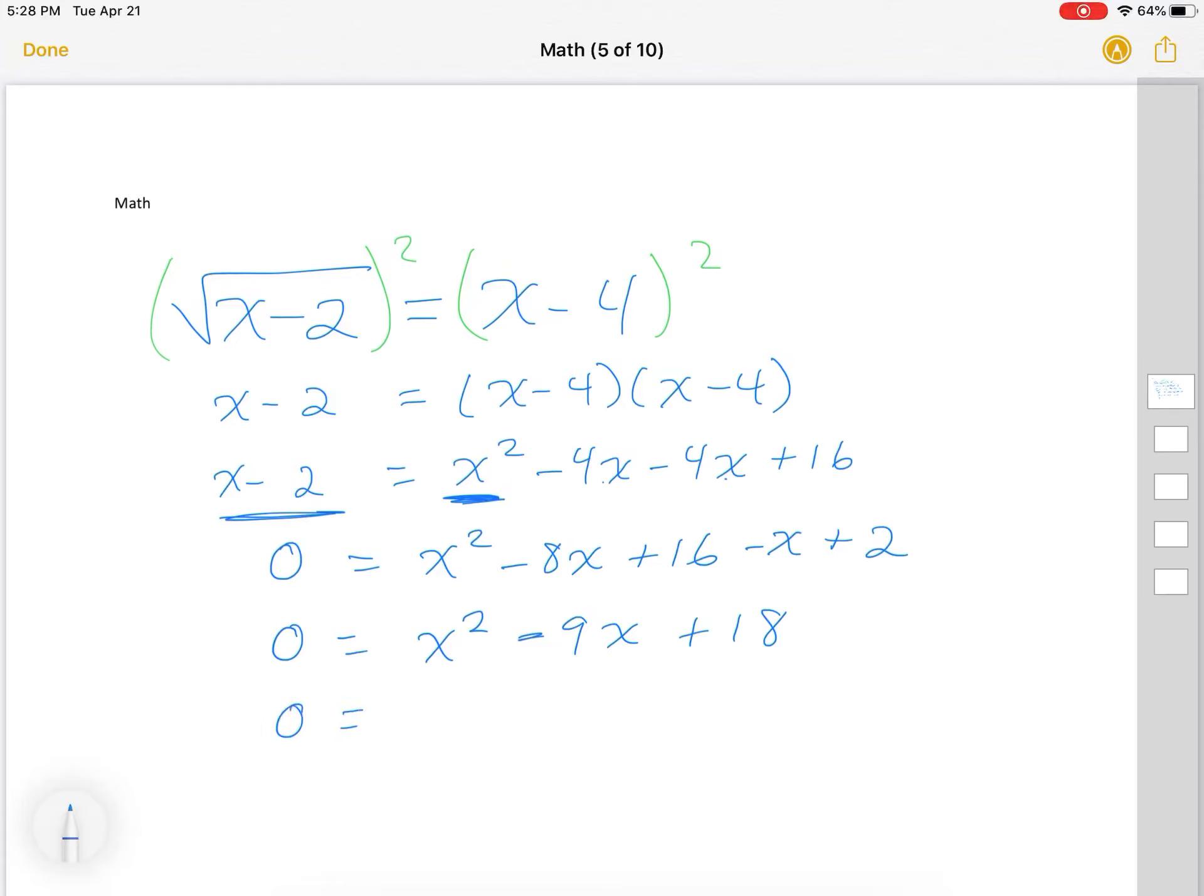So let's just combine our like terms. So I have negative 9x plus 18. Now I've got to factor. So to find the roots, factor.